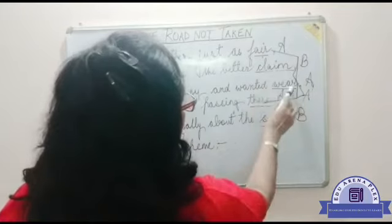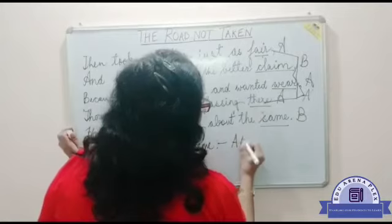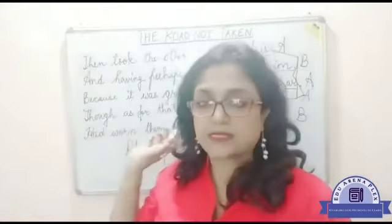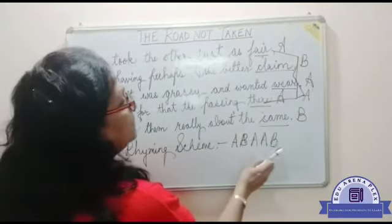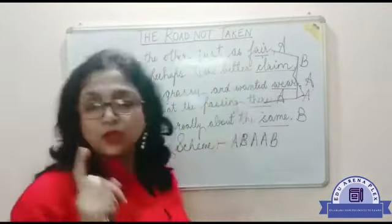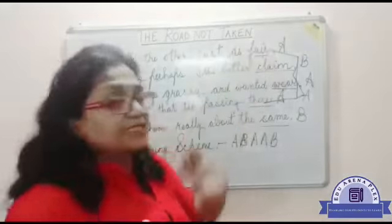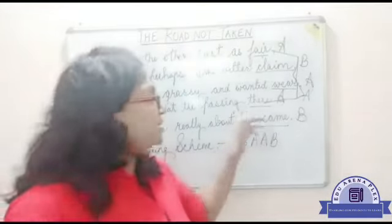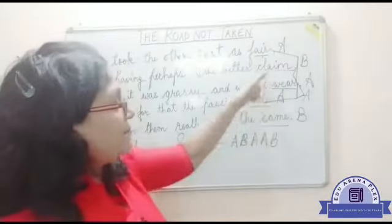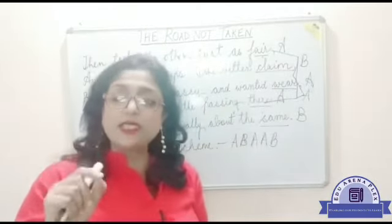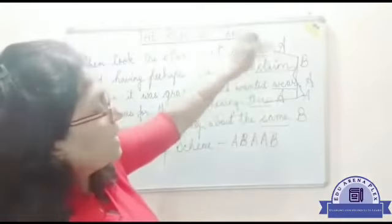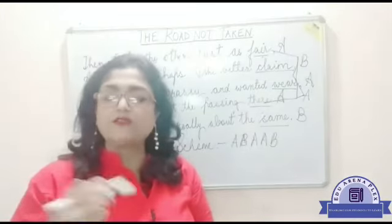Then 'claim' and 'same' — these are both B. So the rhyming scheme is A-B-A-A-B. Let's match it: does 'fair' match with 'claim'? No. Does 'fair' match with 'where'? Yes. Does it match with 'there'? Yes. So 'fair,' 'where,' and 'there' are all A, and 'claim' and 'same' are both B, giving us the rhyming scheme A-B-A-A-B.